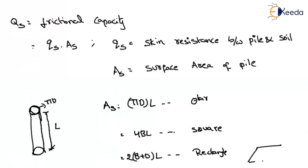For the rectangle, if breadth is B and depth is D, the circumference is B + D + B + D = 2B + 2D = 2(B + D). So the surface area is L × 2(B + D). For a square pile, all dimensions are equal and there are four sides, so the surface area is 4 × B × L. Depending upon the pile type, find the surface area and multiply by skin friction resistance to get the frictional bearing capacity.